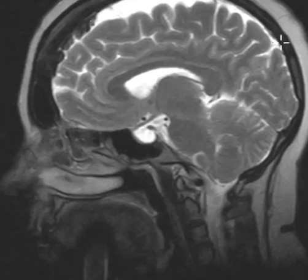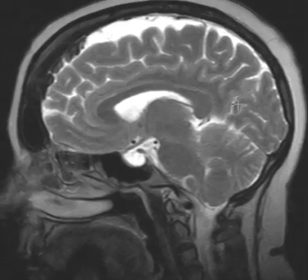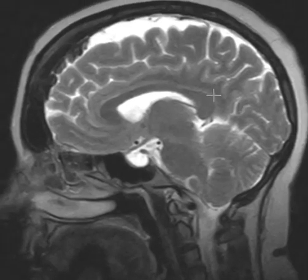You can see the back looking completely normal — the inner and outer table match — and here the large funny-looking inner table. So this is typically a benign condition; we see it pretty regularly, often in females who are a little bit older. We call it hyperostosis frontalis interna.